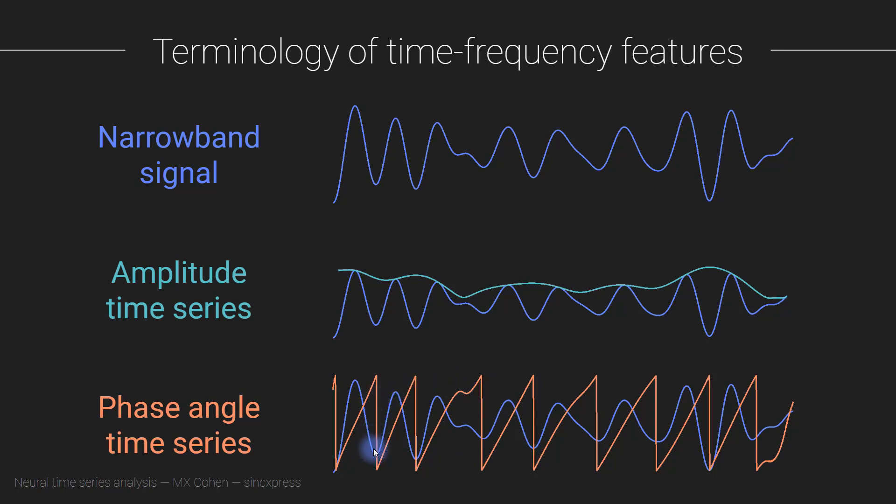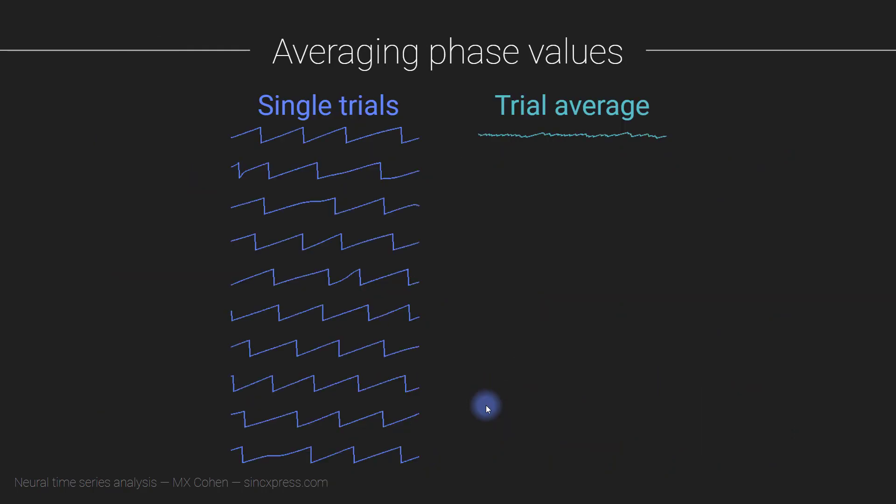You can see that these phase angles reflect the timing of the narrowband signal and not the amplitude. That's important, because remember I mentioned in the previous video when talking about intuition of phase synchronization, what we care about is the timing of the relative time series between two electrodes and not their amplitudes. It's all about the phase angles here.